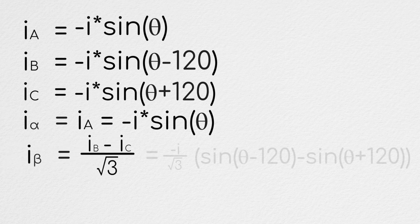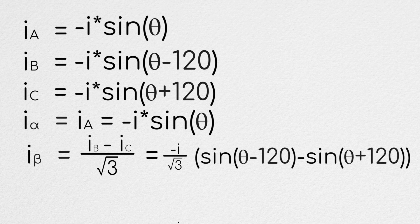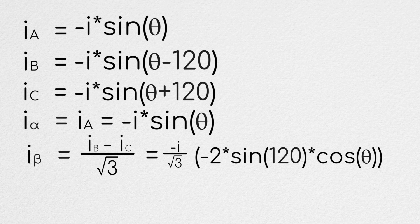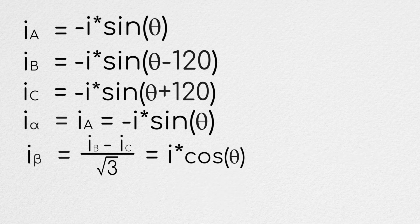Meanwhile, if we plug our b and c currents into the equation we developed for our beta direction current, and then do a few trigonometric substitutions, we find that the current flowing in our beta direction is equal to i times the cosine of theta.